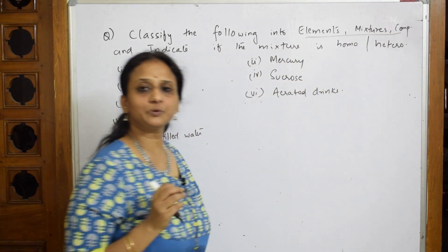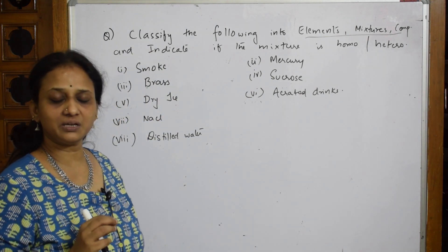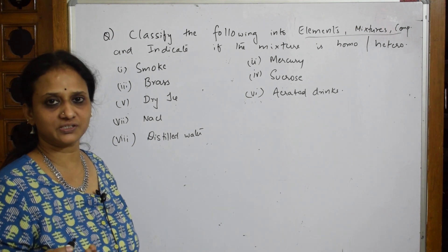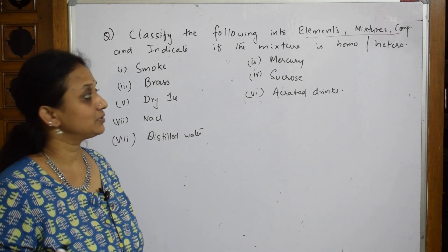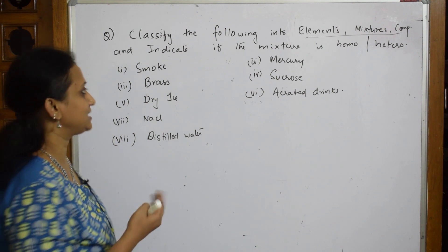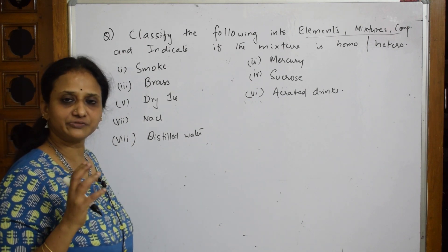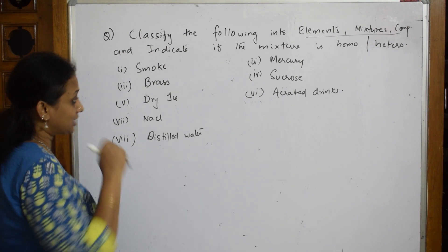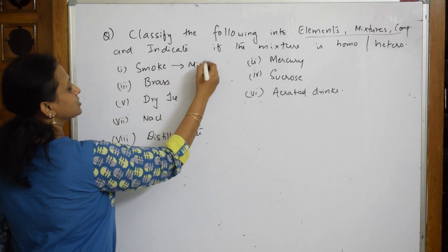Elements are the purest form of a particular substance. Mixtures may be homogeneous or heterogeneous. Compounds are two elements combined together. Let's see — smoke is a combination of different gases, so it will compulsorily be a mixture. I'll write M for mixture.